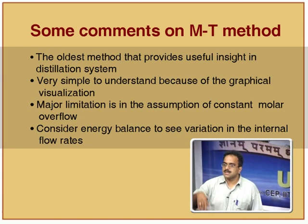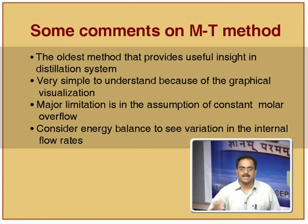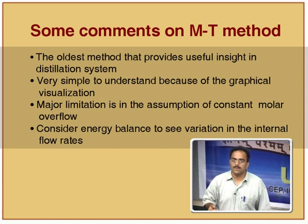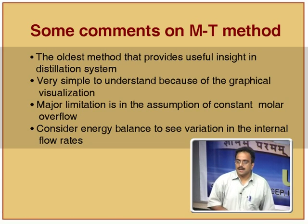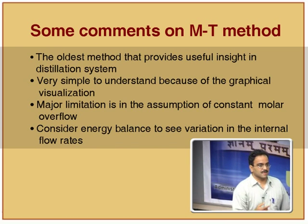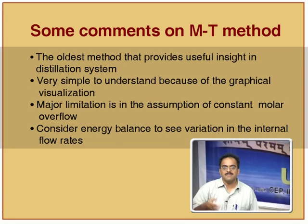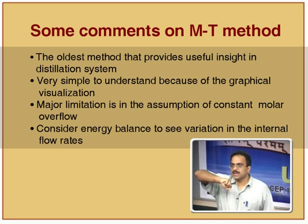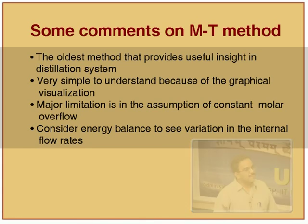The VLE relationship for ideal systems is y = αx / (1 + (α-1)x), where α is the relative volatility — the ratio of vapor pressures of the more volatile to less volatile component. Vapor pressure is a function of temperature, and temperature varies along column height, so α may vary. However, for components with similar chemical structures — like butane/pentane or ethanol/propanol — the ratio of vapor pressures stays approximately constant, making α constant. This assumption is valid only for ideal systems; for non-ideal systems, do not use this equation.